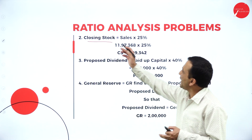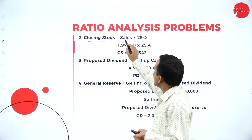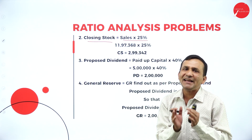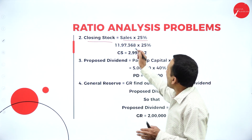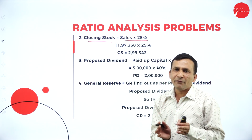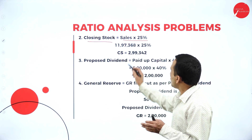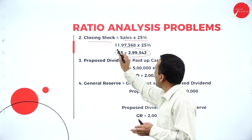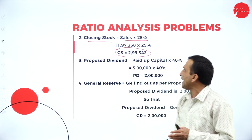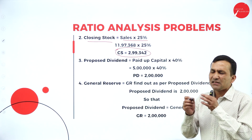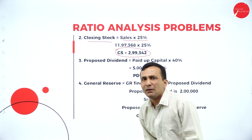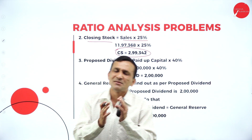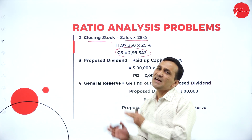There is one adjustment related to closing stock: sales into 25%. After getting the sales value, we calculate 25% of sales. The closing stock we are getting is 2,99,348, which is applicable for the trading account credit side as well as the balance sheet asset side.